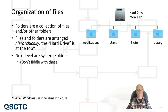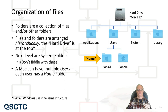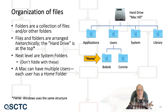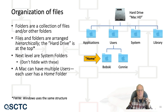The next level — and this is on a Mac, but actually on a Windows PC it's the same organization — there are a bunch of system files. Don't fiddle with these system files; you don't need to be at this level of the file system. But one of those folders is Users. In the Users folder, you have all the users for this computer. My computer has Bobski and Connie. That folder is my top-level folder.